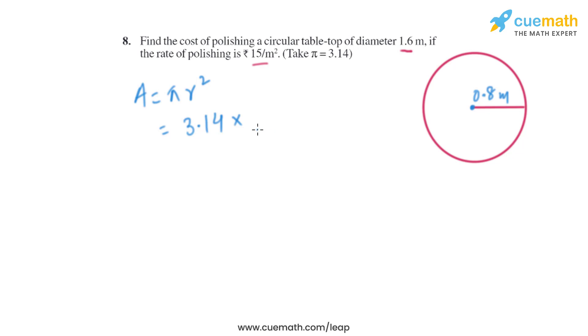The radius is 0.8 meters, as the diameter is 1.6 meters, so radius is half of that. It will be 0.8 squared. When we solve that, we get the area of the circular table which we need to polish is 2.0096 square meters.